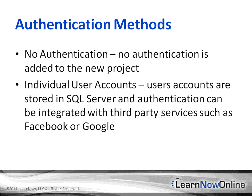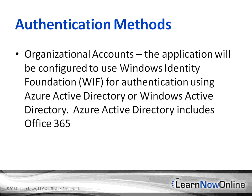When you set up your new project, you'll have the option to choose from several different authentication methods. The first is no authentication — there will be no authentication added and you'll have to manually add it yourself. The next is individual user accounts, which are user accounts stored in SQL Server, with authentication that can be integrated with third-party services such as Facebook or Google — this is the default for both Web Forms and MVC projects. Next are organizational accounts, which configure the application to use Windows Identity Foundation for authentication against Azure Active Directory or Windows Active Directory, including Office 365.